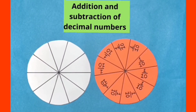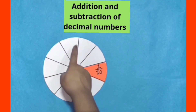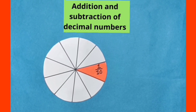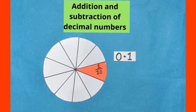We will do an activity to learn addition and subtraction of decimal numbers. Here I have 2 circles with me. Both the circles are of equal size and they have 10 equal parts. When we join these 2 circles, out of 10 equal parts, its 1 colored part's fraction is 1 by 10. You have already learnt that the fraction 1 by 10 can be represented as 0.1 in its decimal form.